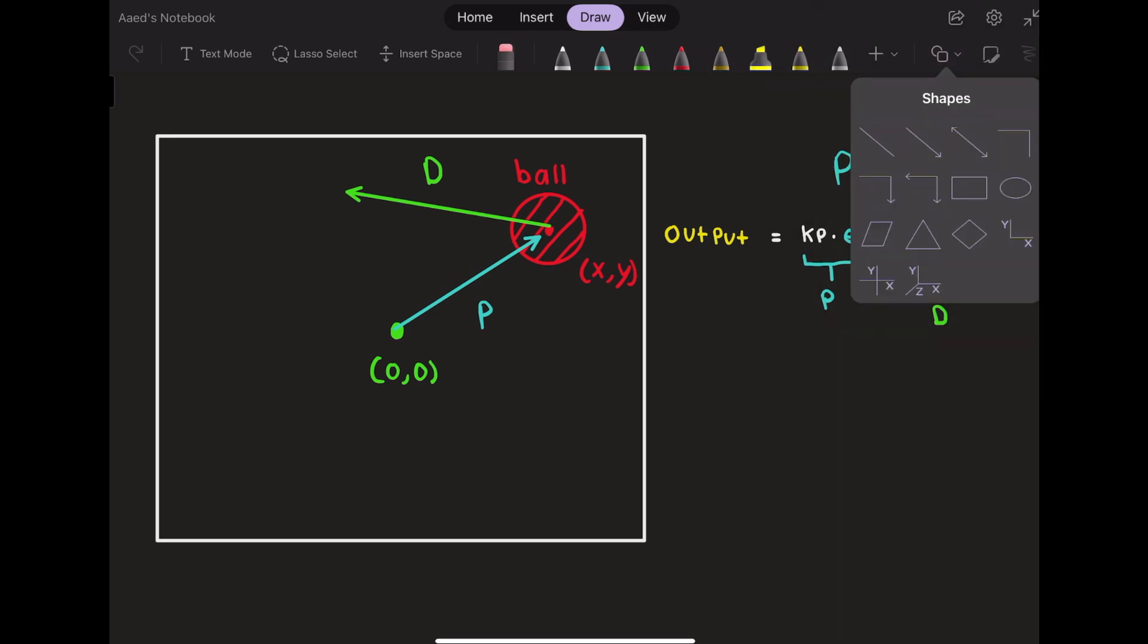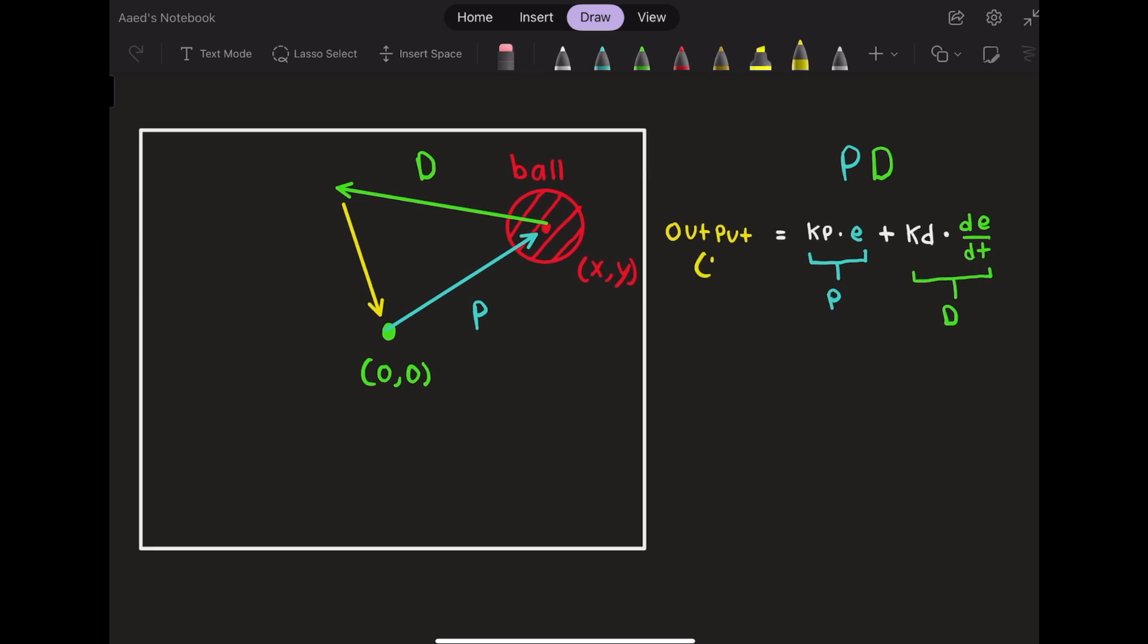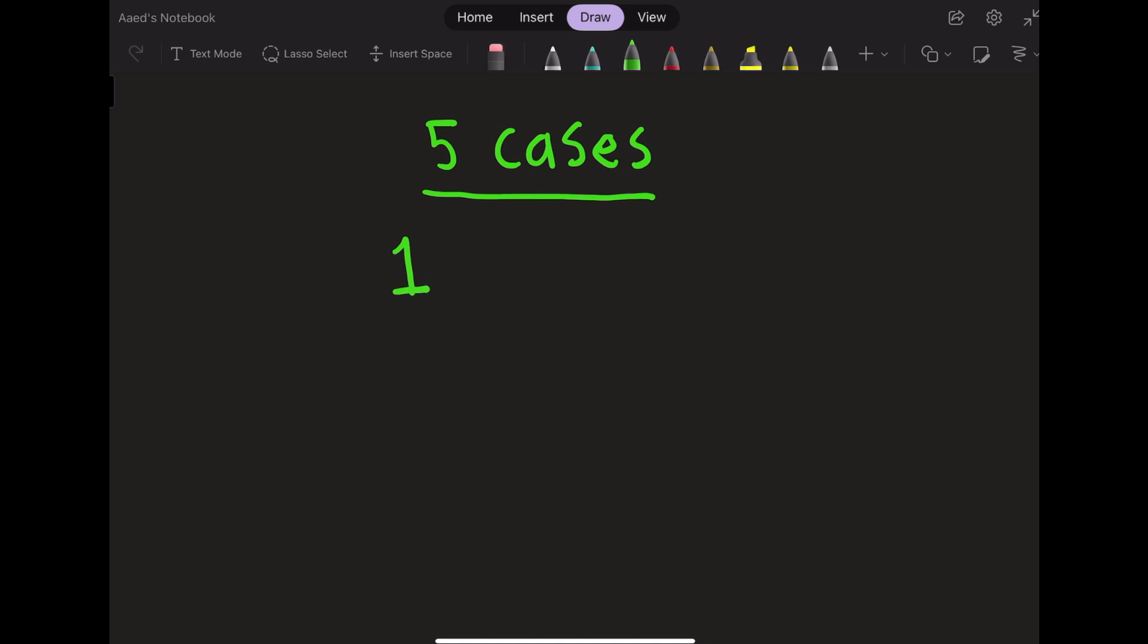As shown in the equation, the output vector is the addition of the proportional and the derivative terms. This output vector is shown in yellow. We can define this output vector as u. Let's now go through five of the unique cases that can occur when tuning a PD algorithm.